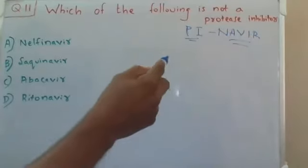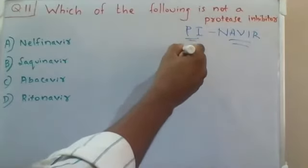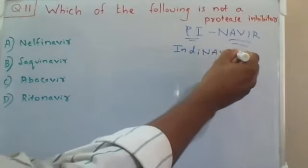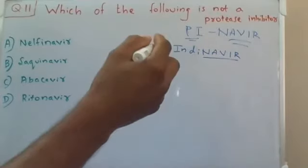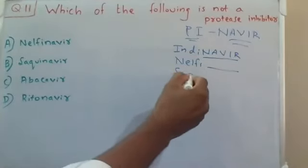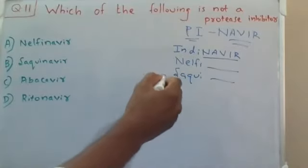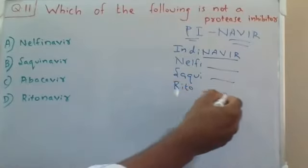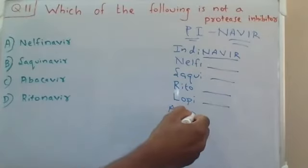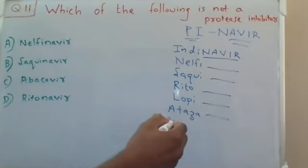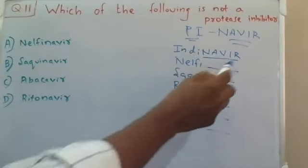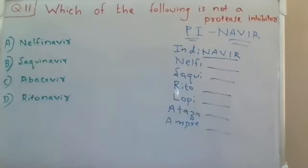They are also called 'navir drugs'. Examples include indinavir, nelfinavir, saquinavir, ritonavir, lopinavir, atazanavir, amprenavir, and fosamprenavir. All these drugs end with '-navir'.